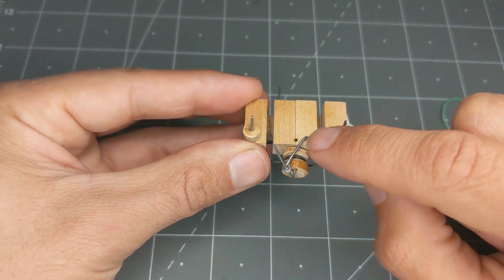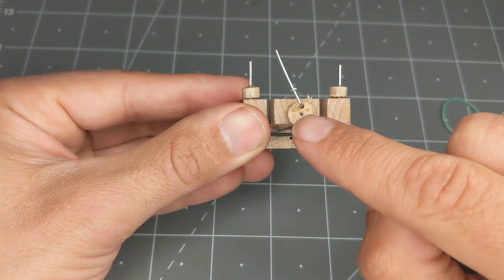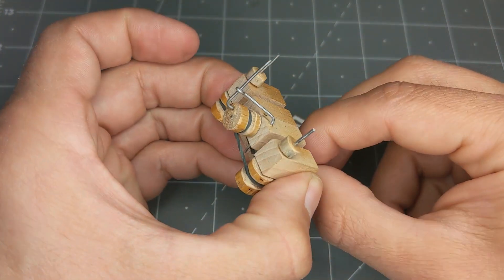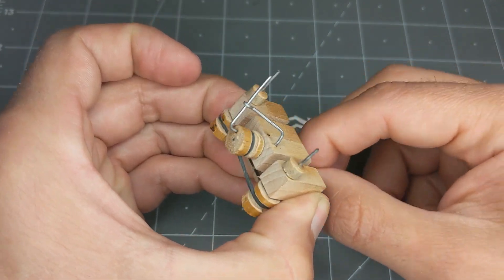So as you can see, that guide moves back and forth freely, and then that one moves freely on the pulley, so then I get it to always point up.